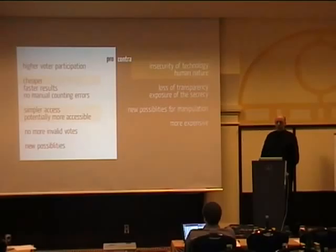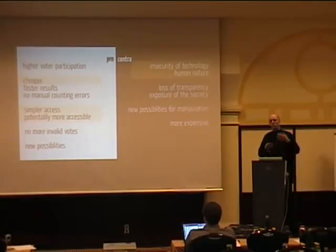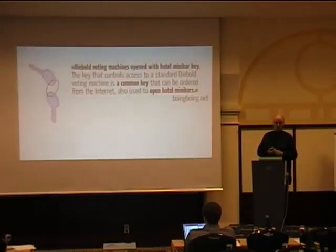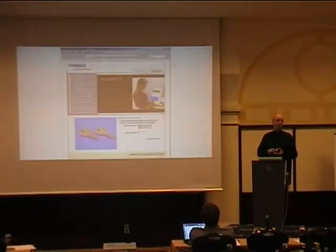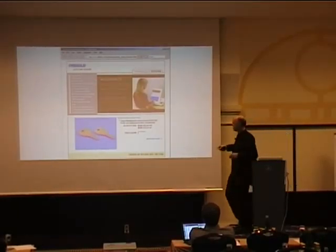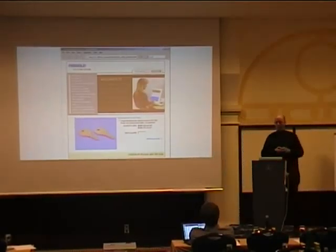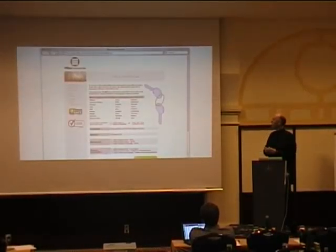Let's look at the insecurity of technology — probably the most interesting aspect here. The Diebold machines have been banned in California because the security was so bad. One reason: you can open them with a hotel minibar key. Boing Boing posted this. You can go to the Diebold webpage, find the AccuVault TS, and see the keys used to open them. On this website, you can see the profile of the key, so you can duplicate it. You can buy the uncut key from office furniture supply stores. So you have the key to open the machine.